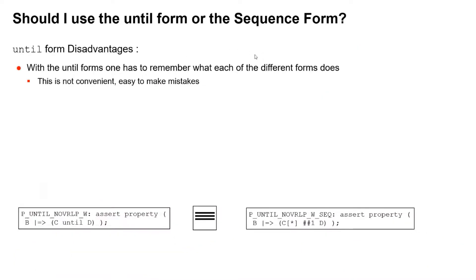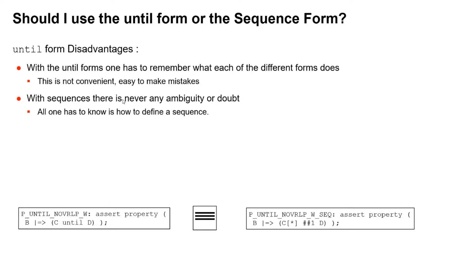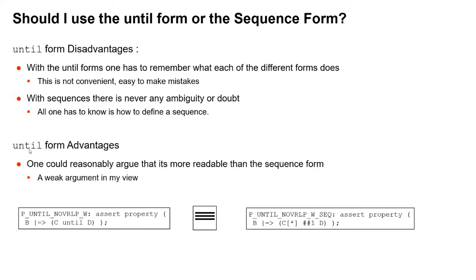Every until property form has a sequence equivalent. So why would you choose one over the other? The disadvantages of until are that you have to remember what each form does, and that's not convenient — it's really easy to make mistakes. With sequences, there's never any ambiguity or doubt; all you need to know is what a sequence does, which you can't avoid knowing anyway if you're using SVA. The only argument for until is that it's slightly more readable, which is a really poor argument. Personally, I would always use the sequence and never touch the until operators. That concludes this video — thanks for listening, and goodbye.